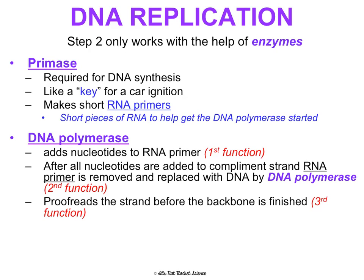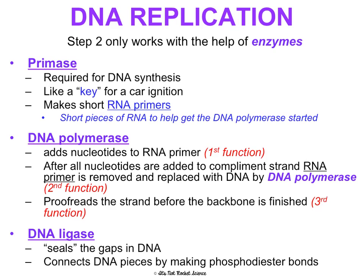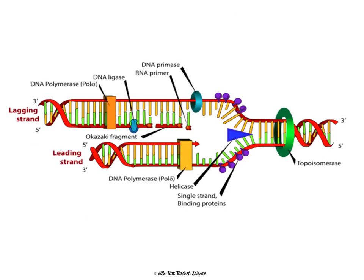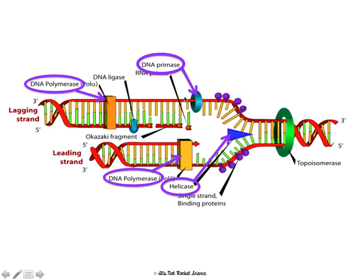DNA ligase is another enzyme that seals any gaps and ensures all the DNA is connected by phosphodiester bonds. In the diagram, the blue triangle is helicase unzipping the DNA; primase brings in the RNA primers; the orange box representing DNA polymerase brings in the complementary base pairs; and DNA ligase seals everything up as replication proceeds.